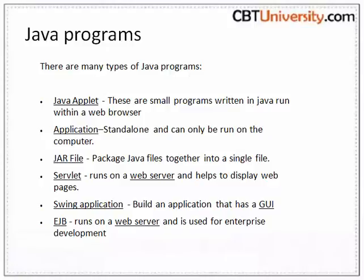EJB — Enterprise Java Beans: EJB runs on a web server and is used to develop large and complex websites. Enterprise Java Beans is a framework that allows one to develop enterprise applications more easily using Java Enterprise Edition. It does this by using standard components, which specify how an application works.